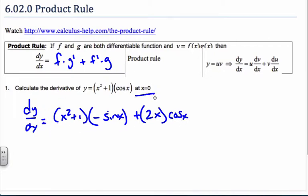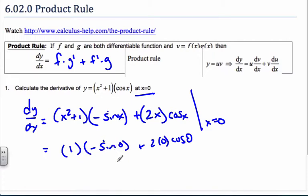Now I want to find it when x equals 0. I plug in 0 and get (0² + 1) times negative sine 0 plus 2 times 0 times cosine 0. Well, sine of 0 is 0, so the derivative is 0. I would have a horizontal tangent line here. The idea is the product rule.